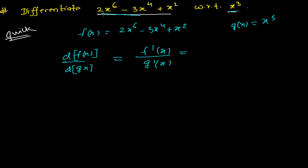Simple. Derivative of this will be, let's write one by one. Derivative of 2x^6 will be 12x^5, then derivative of -3x^4 will be -12x^3, and derivative of x^2 will be 2x. Now derivative of g(x), what you will do? Derivative of x^3, simple, it is 3x^2. Now separate one by one.